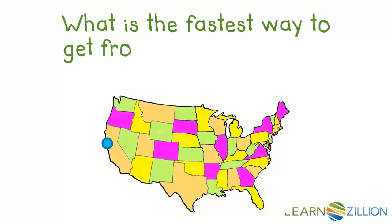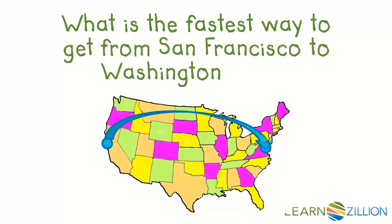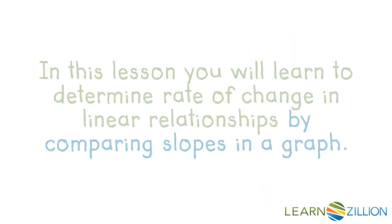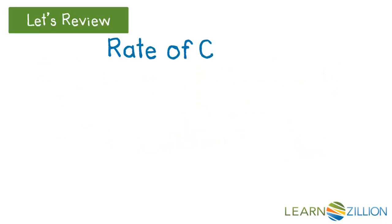What is the fastest way to get from San Francisco to Washington, D.C.? In this lesson, you will learn to determine rate of change in linear relationships by comparing slopes in a graph. Let's take a closer look at what rate of change means in terms of linear relationships.